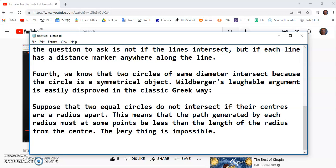So suppose that the two circles do not intersect if their centers are a radius apart. This means that the path generated by each radius must at some points be less than the length of the radius from the center. The very thing is impossible. Q-E-D.